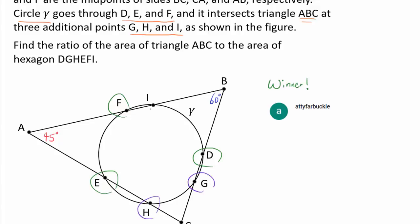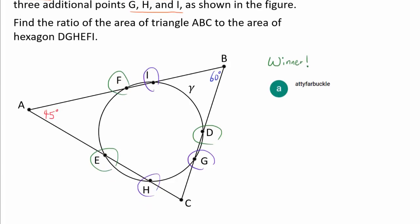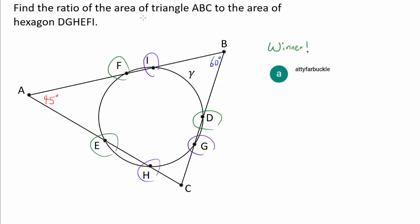So here are the additional points of intersection as shown in the figure. And we wish to find the ratio of the area of triangle ABC, so the entire triangle, to the area of the hexagon DGHEF I.